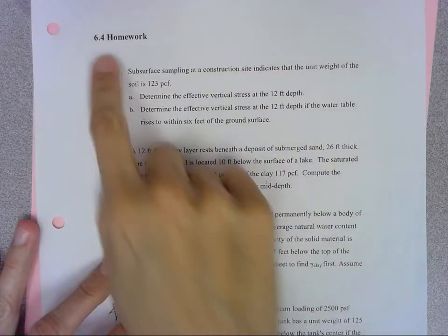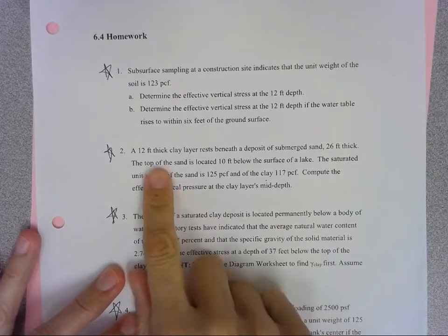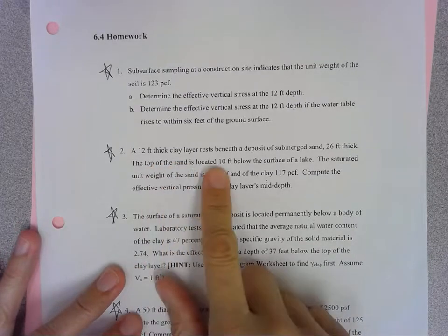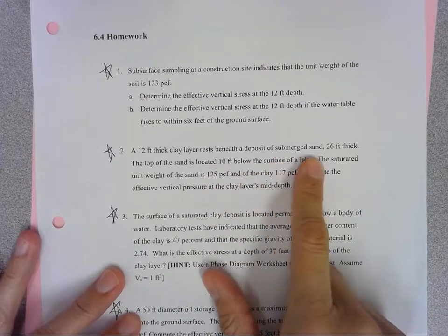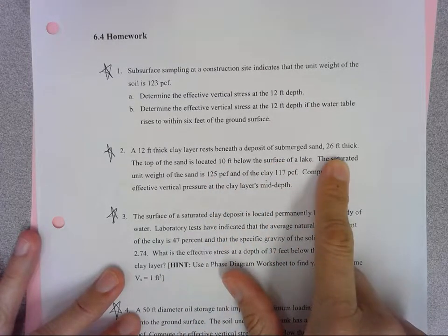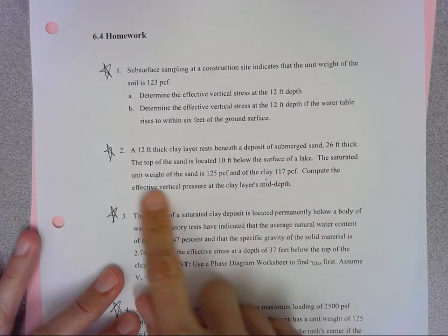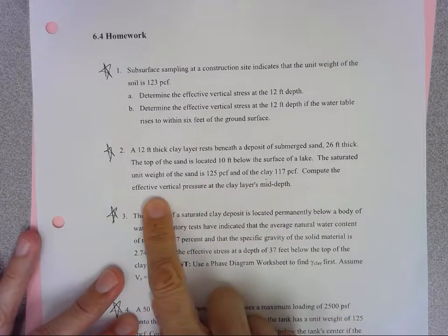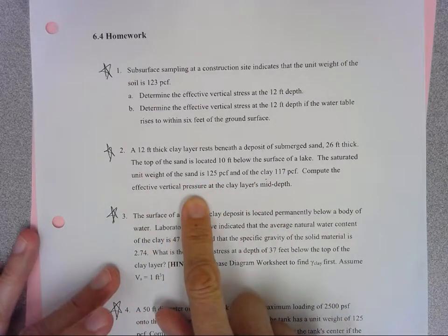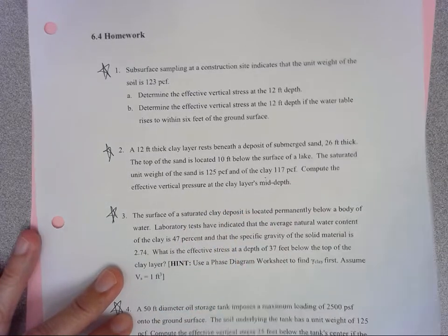Here's a Geotech chapter 6 homework problem number 2. We've got a 12-foot thick clay layer resting beneath a deposit of submerged sand that's 26 feet thick. The top of the sand is located 10 feet below the surface of a lake. We've got unit weights of the sand and clay, and we want to find the effective vertical pressure or stress at the clay layer's mid-depth. Let's start by drawing a profile of that.